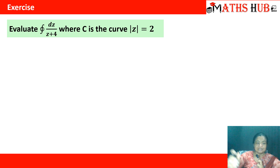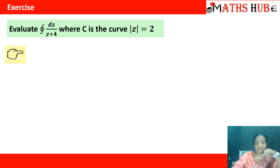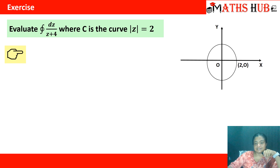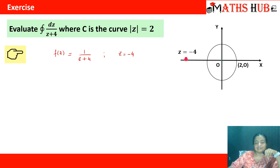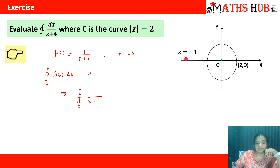Evaluate ∮ dz/(z+4) where c is the curve |z| = 2 — a circle with center at the origin and radius 2. The function f(z) = 1/(z+4) has a singularity at z = -4. Since -4 lies outside the circle |z| = 2, the function is analytic within c, and by Cauchy's theorem ∮ 1/(z+4) dz = 0.